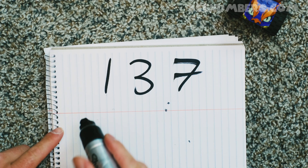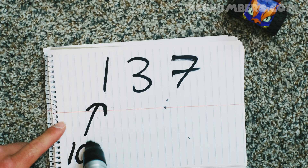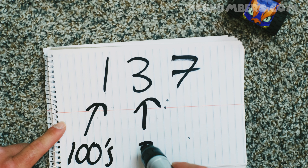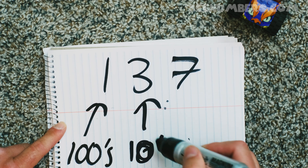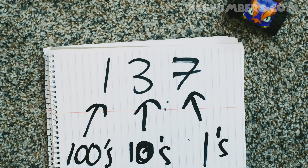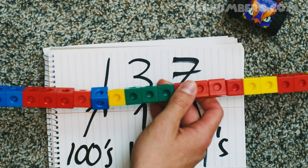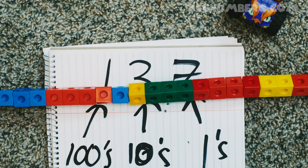In 137, the 1 is in the hundreds place, the 3 is in the tens place, and the 7 is in the ones place. We now have the next big building block — the 100. And it's so big I can't even fit it in the picture!